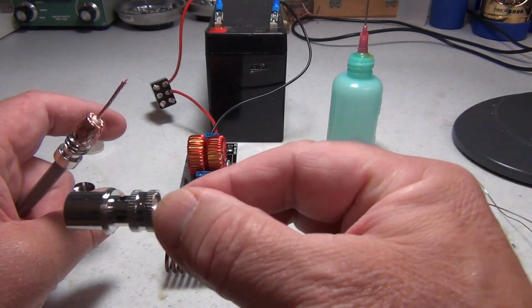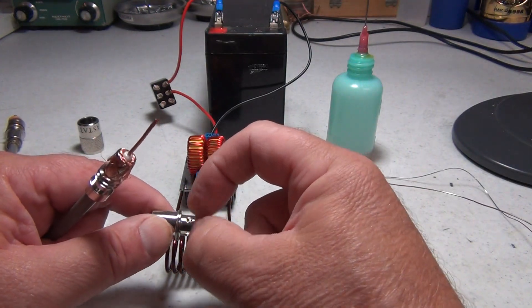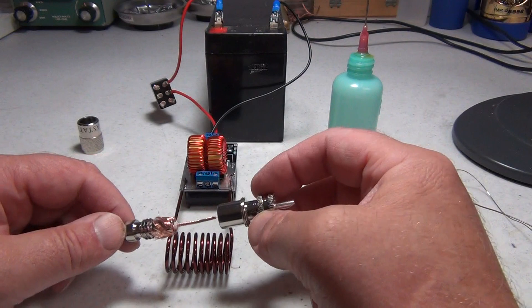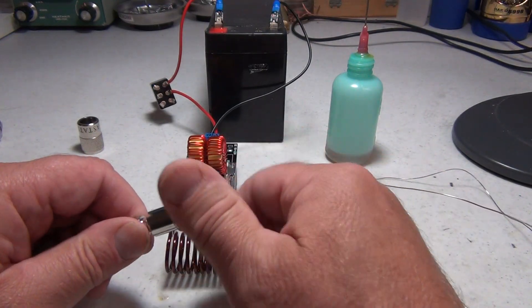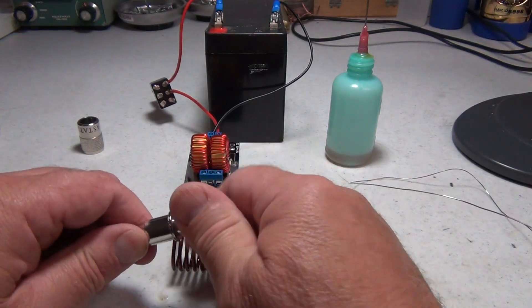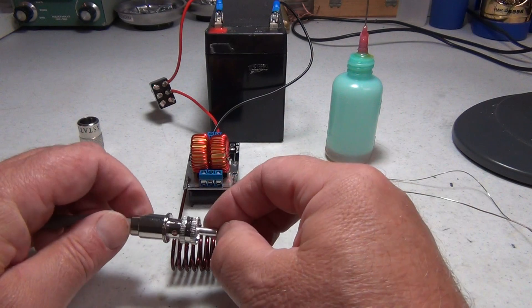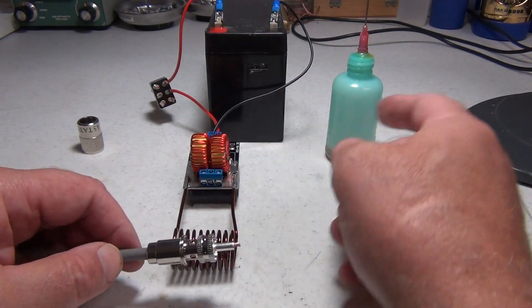When it reaches soldering temperature, the solder will flow all the way around. Otherwise people tend to heat this side and solder, then move and heat this side and solder. This gets it all done at once and gets the heat off as quickly as possible. I'm not going to worry so much about the center conductor because that's not the hard part.